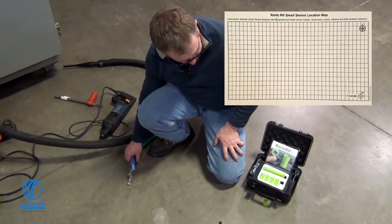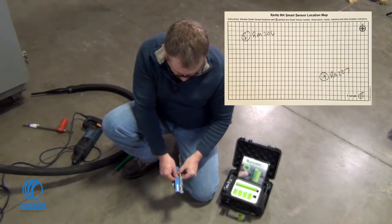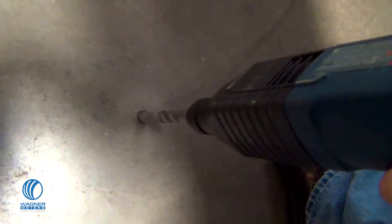Following the ASTM F2170 standard, determine where the RapidRH-L6 test will be placed. Drill the hole to the required depth using a rotary hammer drill and the included 3/4-inch masonry drill bit.